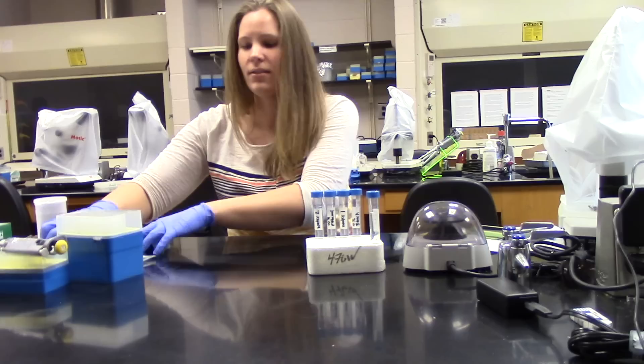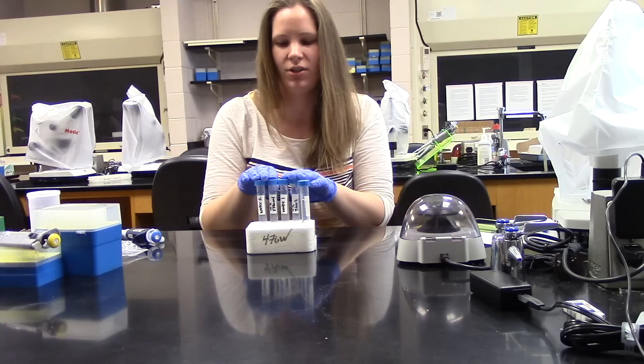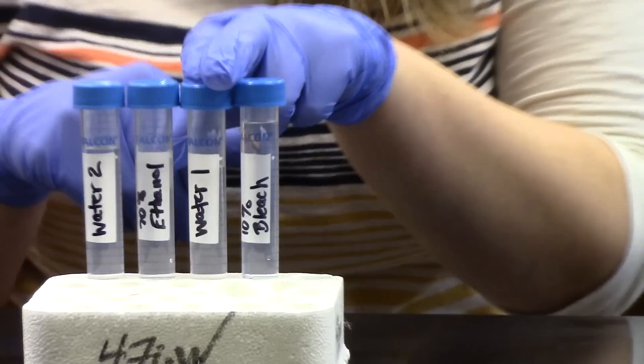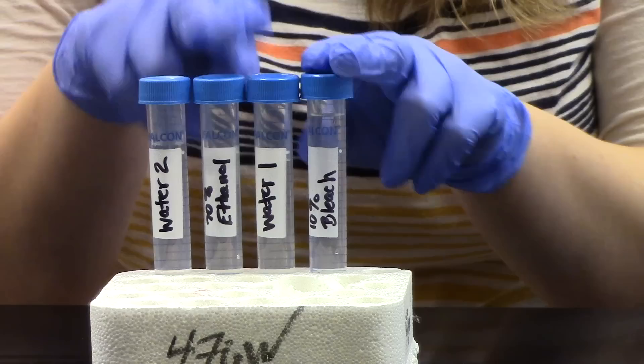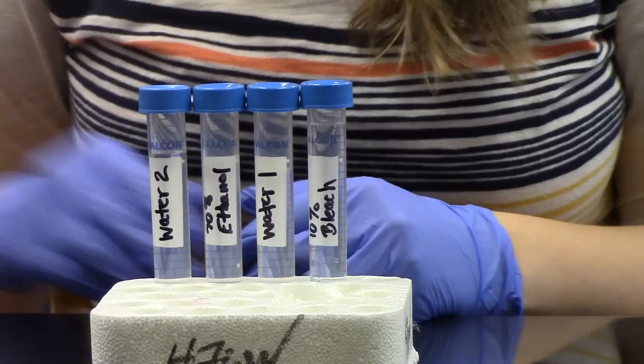Now to sterilize our beetle, we have a floss station here. We are going to begin with bleach, then move on to water 1, then ethanol, then water 2. It is important to keep these waters in this order so that the bleach is fully diluted into the last step. We do not want bleach in our microbiome plates.